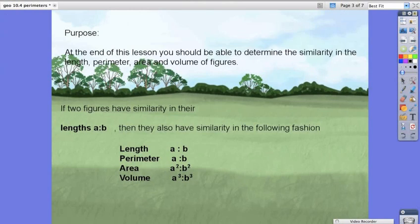That says if two figures have similarity in their lengths, a to b, then they also have similarity in the following: length, perimeter, area, and volume.